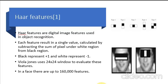This difference is then compared to a learned threshold that separates non-objects from objects. The sum of pixels in the unshaded rectangles are subtracted from the sum of pixels in the shaded rectangle. Even for small images, there are a lot of features: over 160,000 for a 24x24 image.